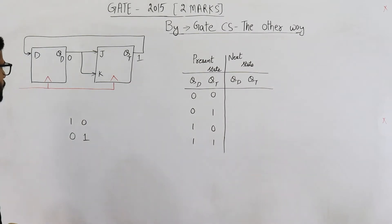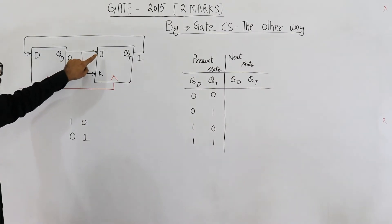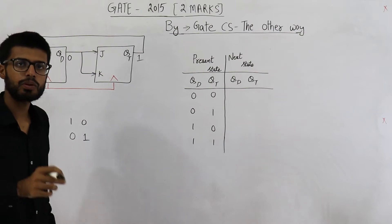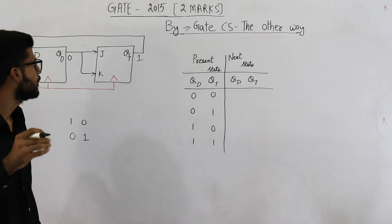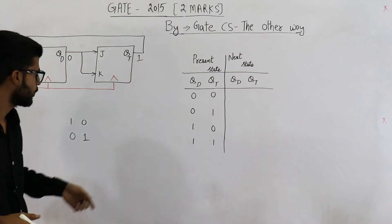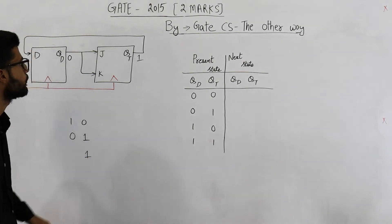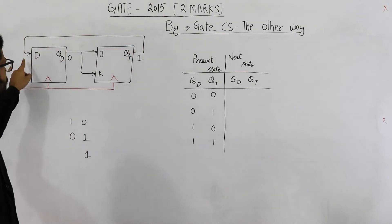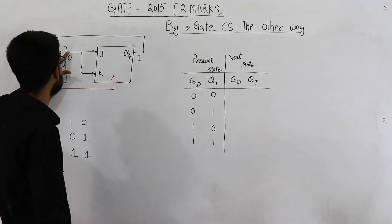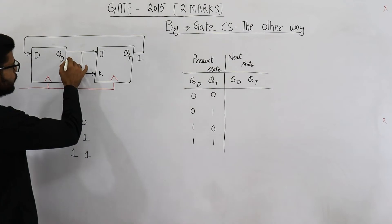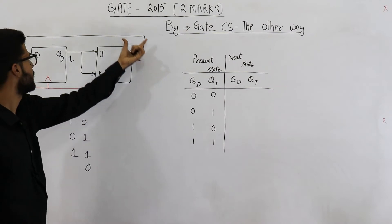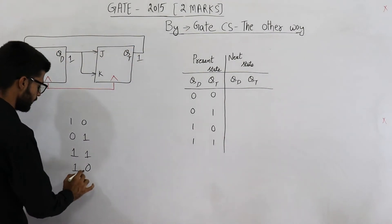Now we give the next clock. QD is 0, so J=K=0, meaning T=0. The T flip-flop will not toggle — it retains its previous state of 1. And the D input, which is 1, shifts into QD. So this input will also become 1. So QD=1, QT=1 after this clock.